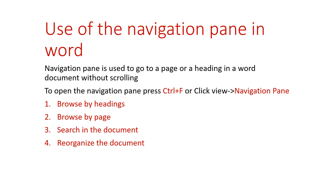The four ways to use the Navigation Pane are: first, browse by headings; second, browse by page; third, search in the document; and fourth, reorganizing the document. Browse by heading means to search by heading. By page, you can search for a particular word. The third option lets you find particular text anywhere in the document. The fourth — reorganize — lets you make changes to headings directly from the Navigation Pane without going into the text itself.